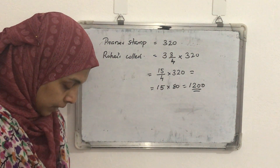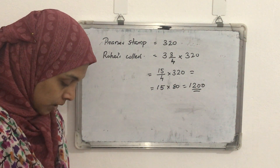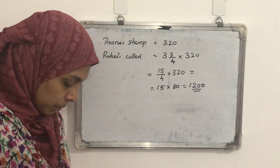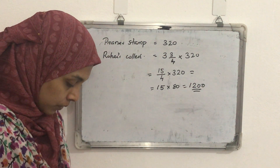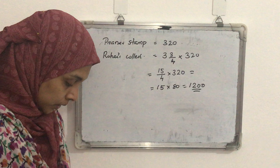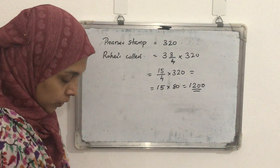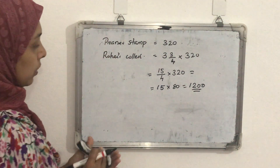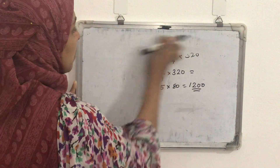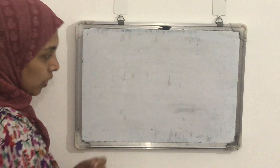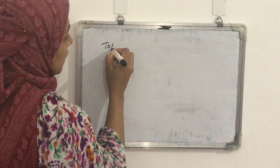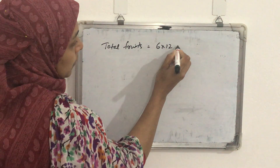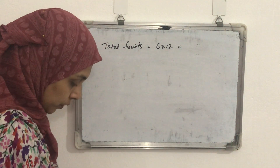One more question: 1/3 of the 6 dozen fruits in a fruit seller's cart are apples. 1/4 of all the fruits are oranges, and the rest are bananas. How many dozen bananas are there in the fruit seller's cart? Total fruits = 6 dozen. Since 1 dozen equals 12, total fruits = 6 × 12 = 72.